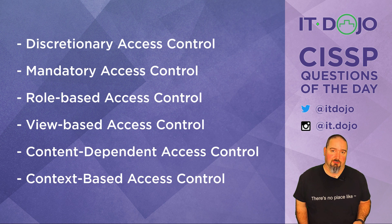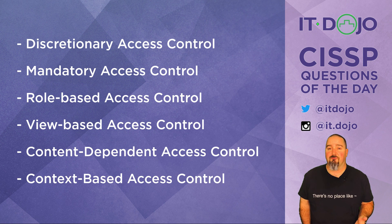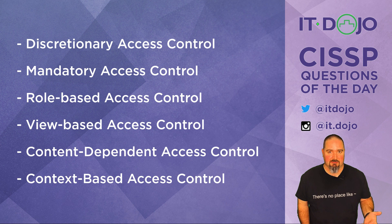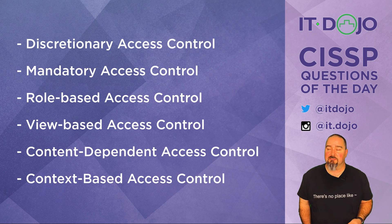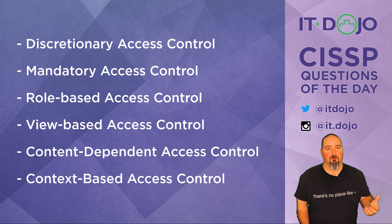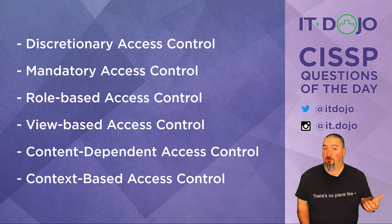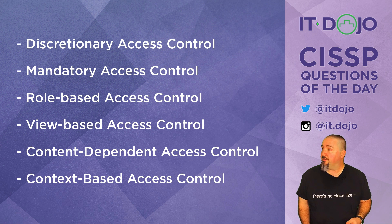First answer choice is the wrong answer choice. Discretionary access control in no way, shape, or form goes in and controls access based upon what kind of data is contained within. Discretionary access control allows the owner of the resource — usually a file — but the owner of the object or resource to go in and at their discretion assign permissions to other users or other systems. So that is very much not what we're looking for here.